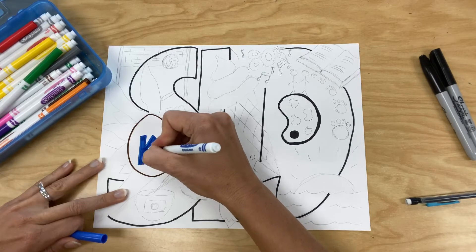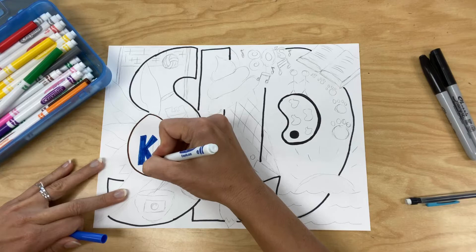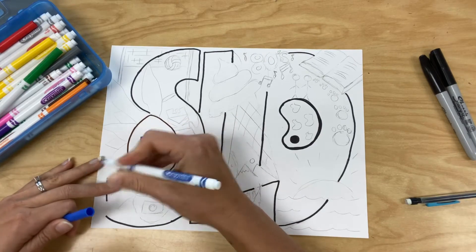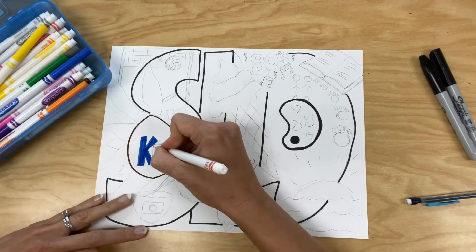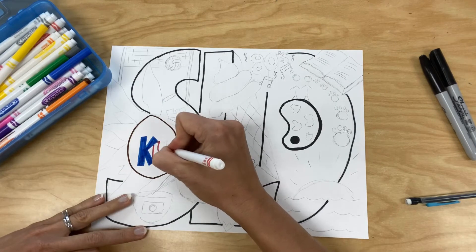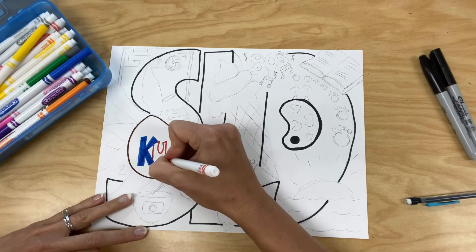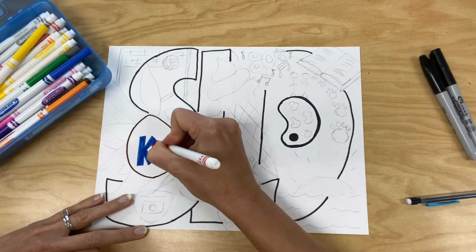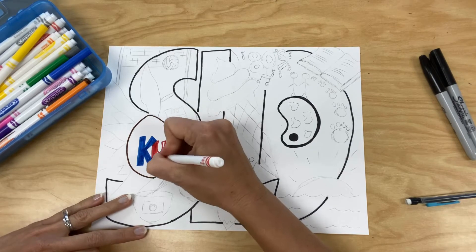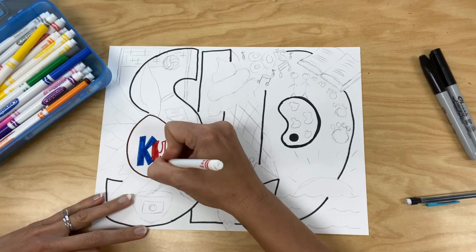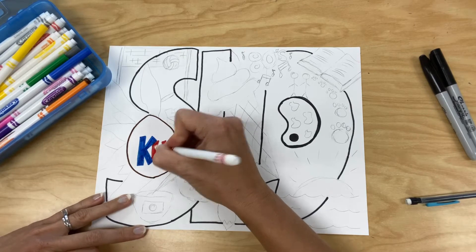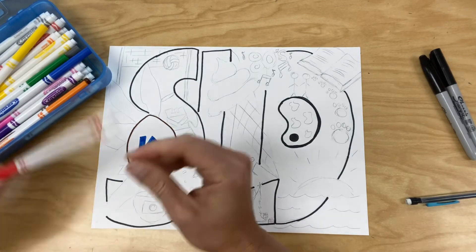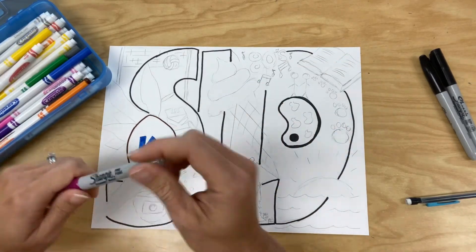Some things you could color in solid with marker and other things you're going to want to consider using colored pencils, crayon, or watercolor colored pencils. The reason for that is some things are more interesting when you can blend colors and overlap and create gradation from light to dark. So consider incorporating colored pencils, crayon, or watercolor pencils to give a more interesting effect.